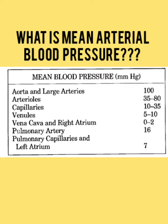Here one question arises: what would happen if all these values were just 100? The answer is that there would be no blood flow because of the uniformity. Blood will only flow from an area of higher pressure to an area of lower pressure. If all values were 100, then the blood would not flow.